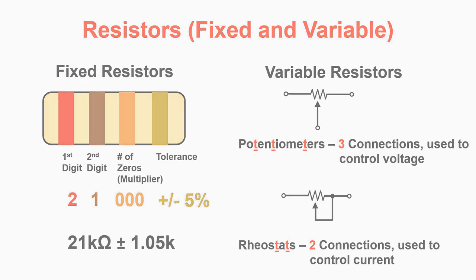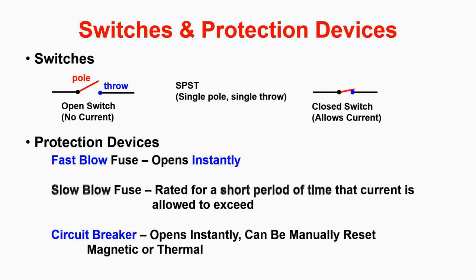The last portion we'll talk about is switches and protection devices. Switches consist of a pole and a throw, indicated here in red and blue. When the pole is not in contact with the throw, there is no current flow. However, when we change the position of the switch and close it, the pole comes in contact with the throw and then allows current to flow.